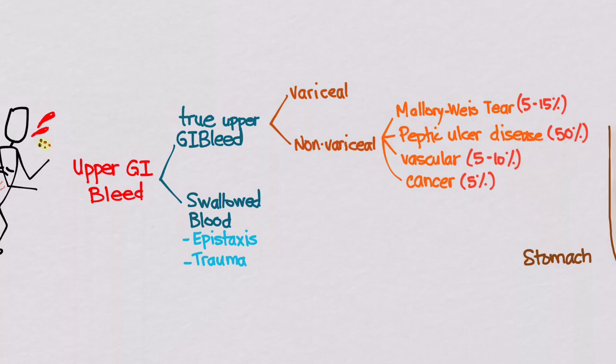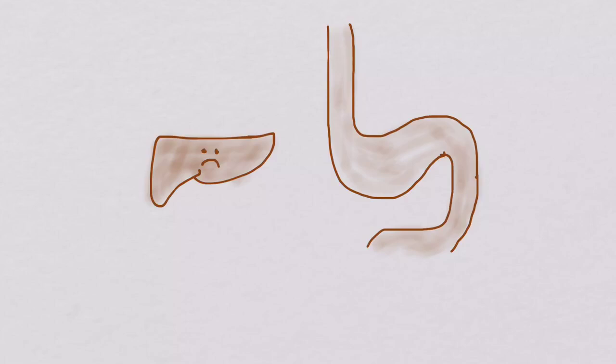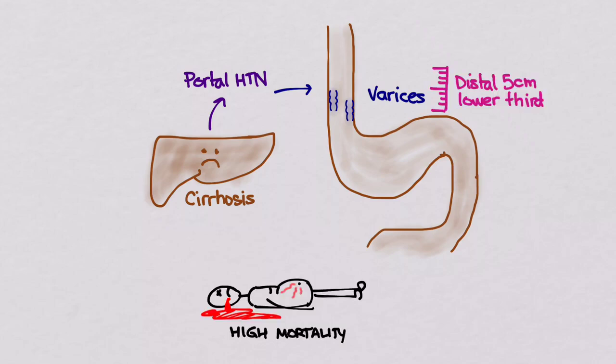Variceal bleeding tends to start with cirrhosis, which leads to portal hypertension and then dilated submucosal veins, usually in the lower third of the esophagus or the distal 5 centimeters is where most of them occur. And it's associated with a pretty high mortality.